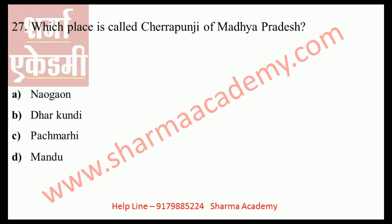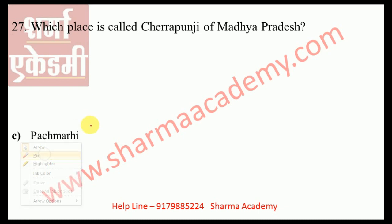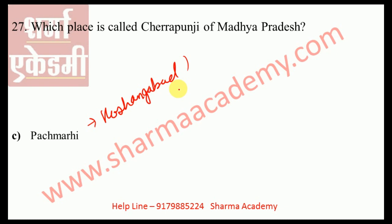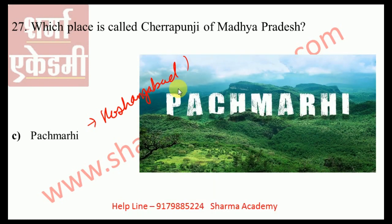Which place is called the Cherrapunji of Madhya Pradesh? Options: Naya Gaon, Dhar, Kundi, Pachmarhi, or Mandu. The correct answer is Pachmarhi. Pachmarhi, located in Hoshangabad district under the Satpura mountain range in the southeastern part of Madhya Pradesh, is called the Cherrapunji of Madhya Pradesh due to being the most rainy place. Pachmarhi receives the highest rainfall of 251 centimeters. It is now more accurately comparable to Mawsynram rather than Cherrapunji.